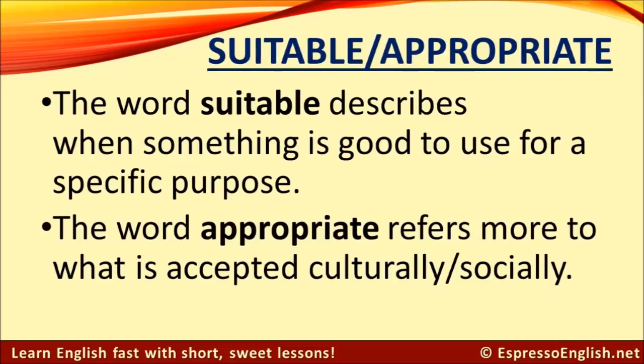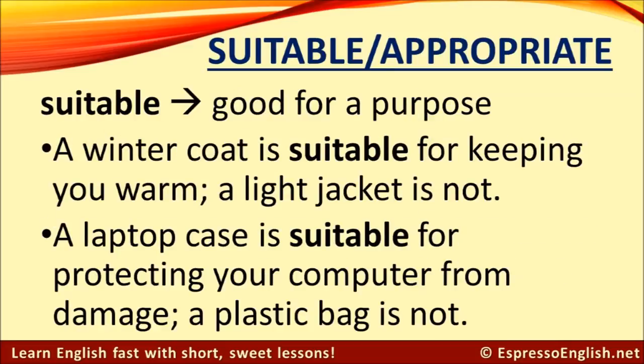Let's turn our attention to suitable and appropriate. The word suitable describes when something is good to use for a specific purpose, and the word appropriate refers more to what is accepted culturally and socially. Here are some examples of things that are suitable — they are good for a purpose. A winter coat is suitable for keeping you warm; a light jacket is not suitable. A laptop case is suitable for protecting your computer from damage; a plastic bag is not suitable for this purpose.